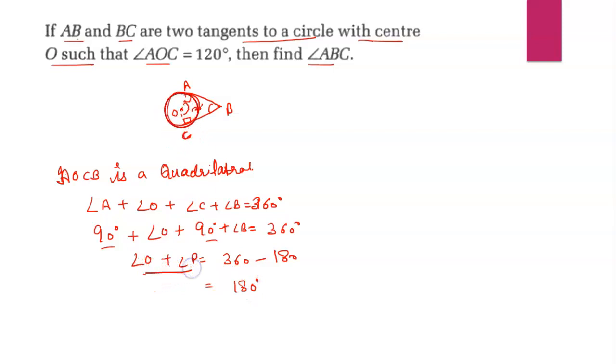You can see that the sum of opposite angles is 180 degrees. Here angle O is 120 plus angle B, so angle B equals 180 minus 120, which equals 60 degrees.